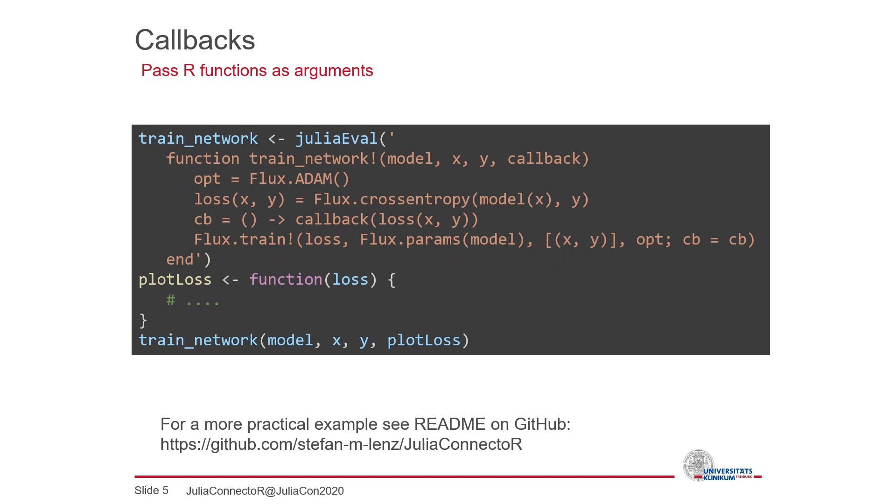R functions can also be passed as arguments to Julia functions. This allows to call back to R from Julia. Here we see how we can specify a callback function that is executed during the training. For this we define again a training function that accepts as fourth argument another function. This callback function can be used to communicate the current training loss back to R during the training. This can be used to create a monitoring plot showing the training progress live. A complete example for this can be found in the readme of the package on GitHub.